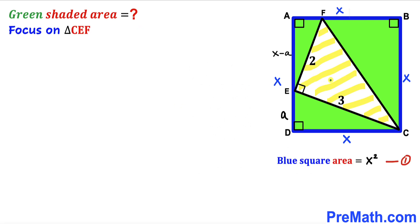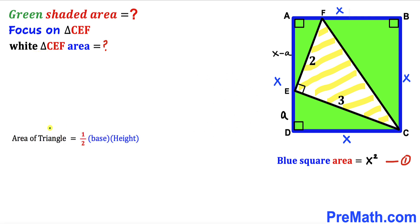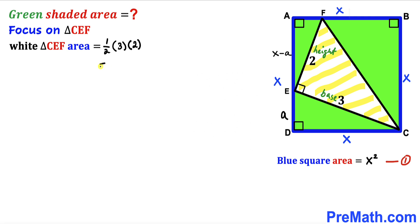Now let's focus on white right triangle EFC and calculate its area using the formula: area = ½ × base × height. The base is 3 units and the height is 2 units, so the area equals ½ × 3 × 2 = 3 square units. This is equation 2.